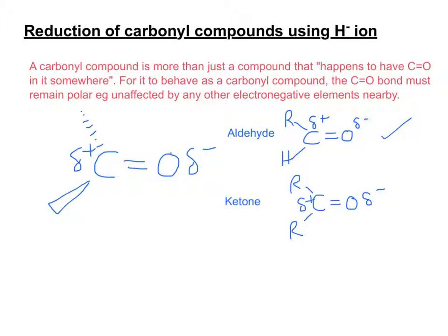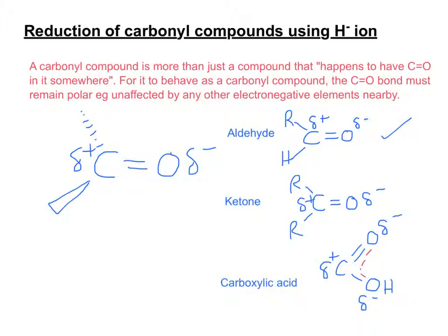However, if you have a carboxylic acid, this time you've got a C=O and then another oxygen bonded to the same carbon. So you've got a slight problem, because you have the polarity of the C=O bond but also the polarity of the C–O single bond. What that means is you get a slight delocalisation of electrons that moves the double bond above or below. So this cannot be considered a carbonyl compound in the same way that ketones and aldehydes can.